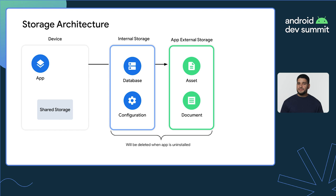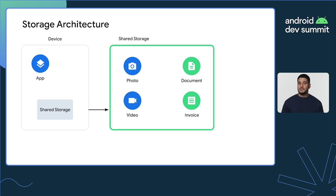And finally, there's the shared storage, also known as the device external storage. It's a common location for all apps to contribute files that can be seen by file managers and photo gallery apps. Files added there aren't deleted after apps are uninstalled. The shared storage content is automatically indexed by MediaStore, which is a content provider that keeps track of metadata for shared storage files. It's used by apps to efficiently fetch information on all media files.